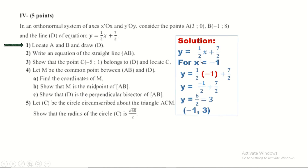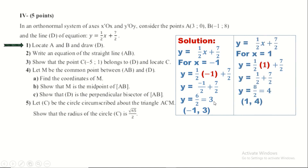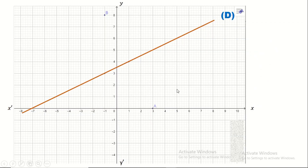For x = -1: y = half times (-1) + 7/2 = -1/2 + 7/2 = 6/2 = 3. So the first particular point is (-1, 3). For x = 1: y = 1/2 + 7/2 = 8/2 = 4. So the second particular point is (1, 4). We plot these two points and join them to get the straight line D. We also locate points A(3, 0) and B(-1, 8).